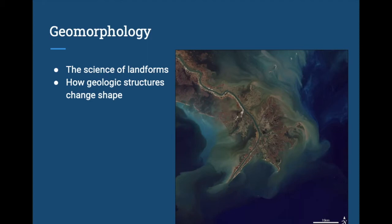A landform is a generic term referring to some object out in nature that has been classified and has a name. What we're going to be getting into is how these landforms come to be. We've already talked about mountains a little bit when we got into plate tectonic stuff — a mountain is a landform because it's a thing out in nature and we can point to it and say, that's a mountain. This image here on the screen is a river delta — specifically the Mississippi River Delta.